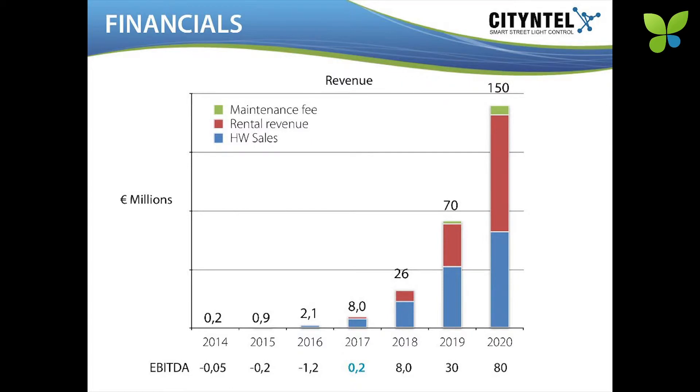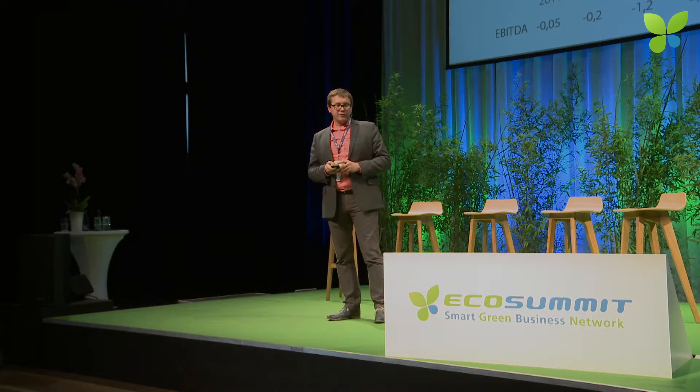What we see in the market is that the next couple of years it's still mainly a pilot market — there will not be many large installations, because we are also dependent on the adoption rate of LED streetlights. So we are establishing ourselves in the market, but we see that by 2017 we will be at breakeven. And by 2020, we generate more revenue from the rental model than from hardware sales. Our goal is really to move into a recurring revenue model.